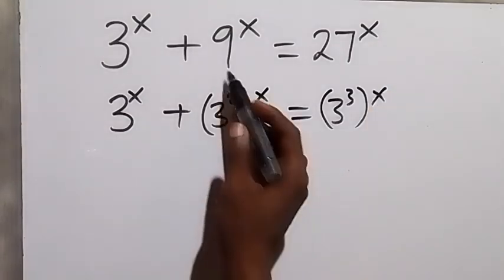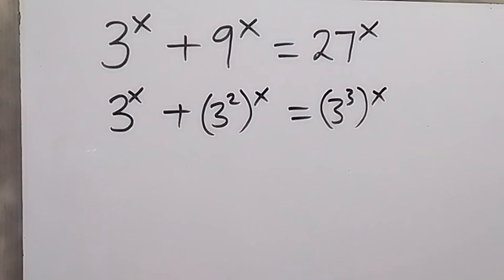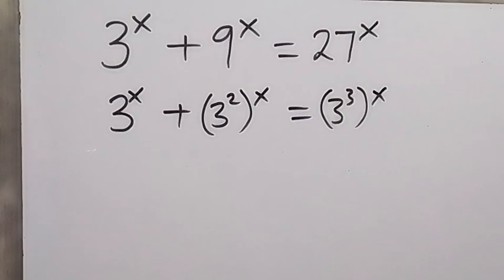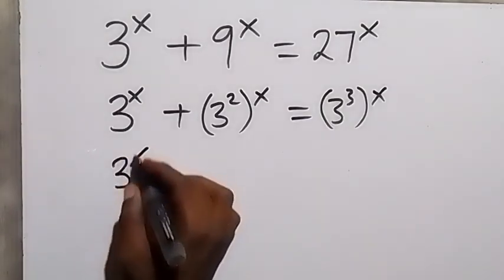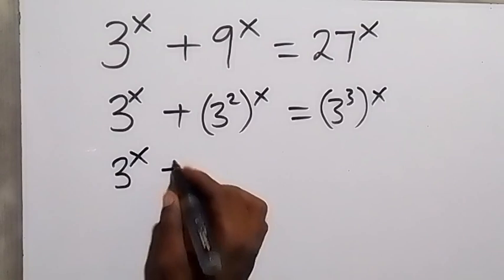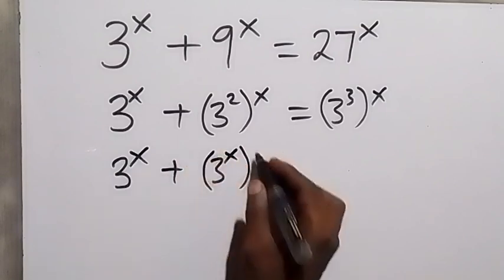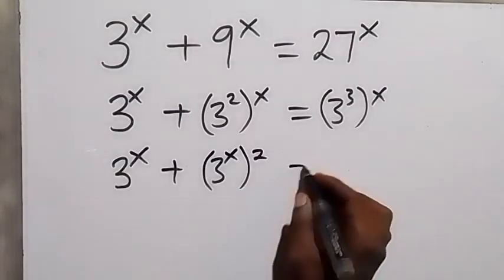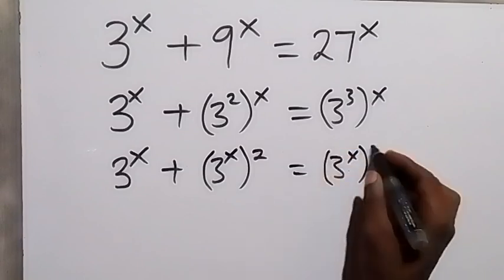This gives us 9 and this gives us 27. From here we can interchange this power and rewrite it. This will become 3 raised to power x plus 3 raised to power x, then raised to power 2. This is from the law of indices, which equals 3 raised to power x, then raised to power 3.